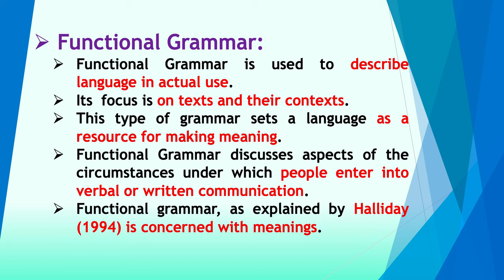But the functional way of looking at a text or any written piece is that it looks at its meaning. One text sometimes may have different meanings from different angles, depending upon how you look at and how you interpret it. So this type of grammar sets language as a resource for making meaning — one text can have different meanings depending on how you interpret it.